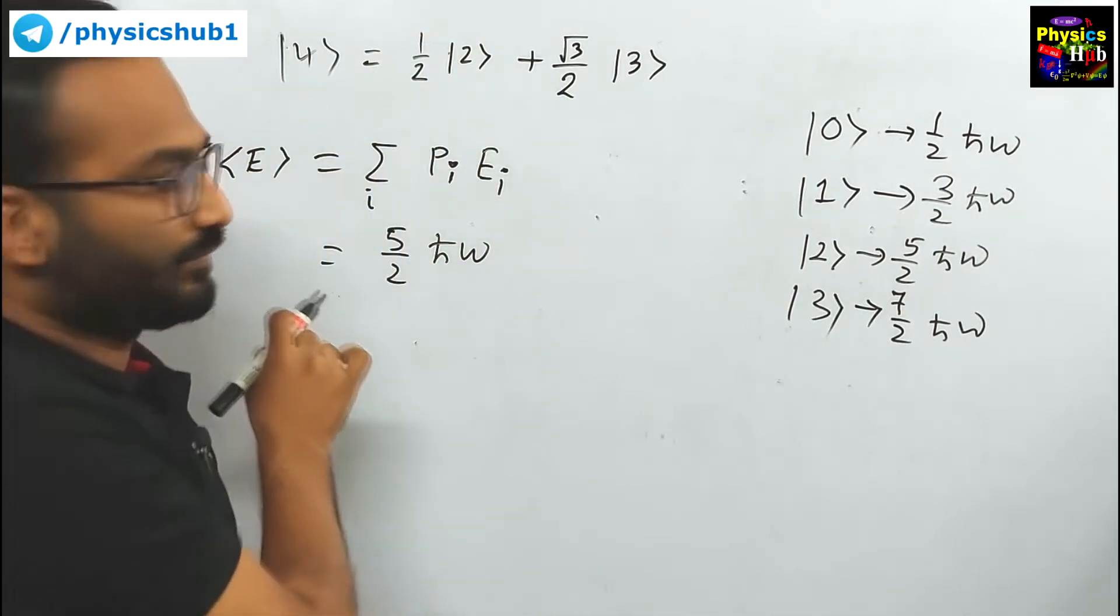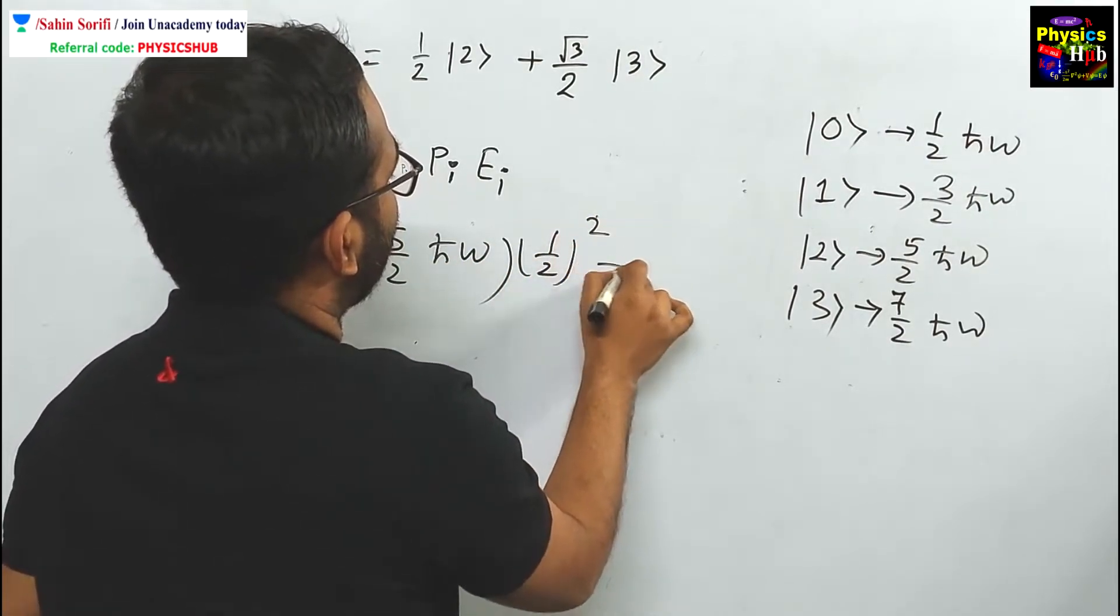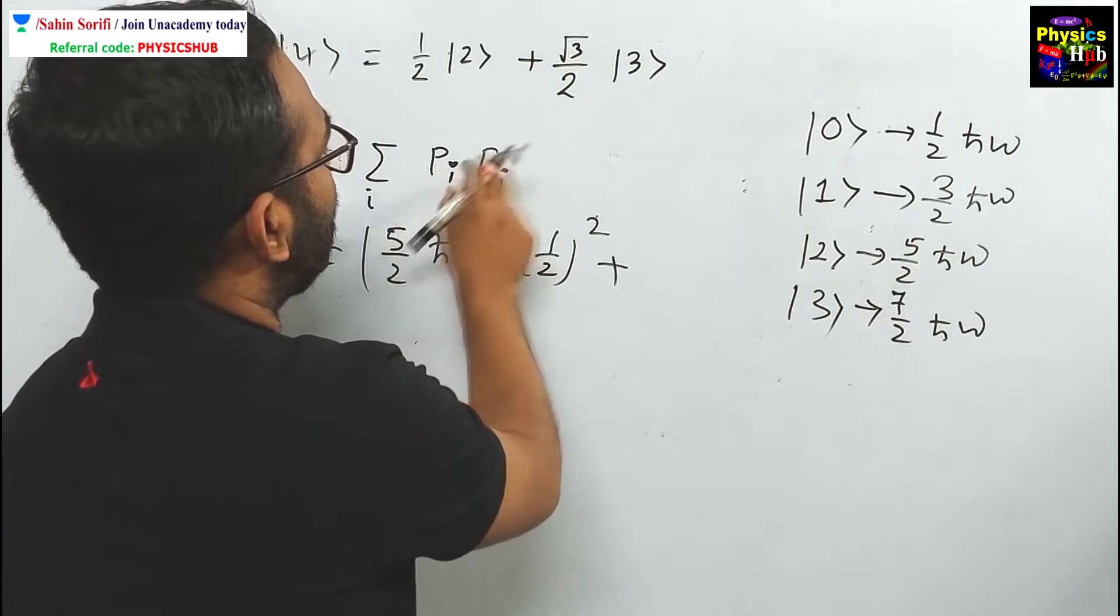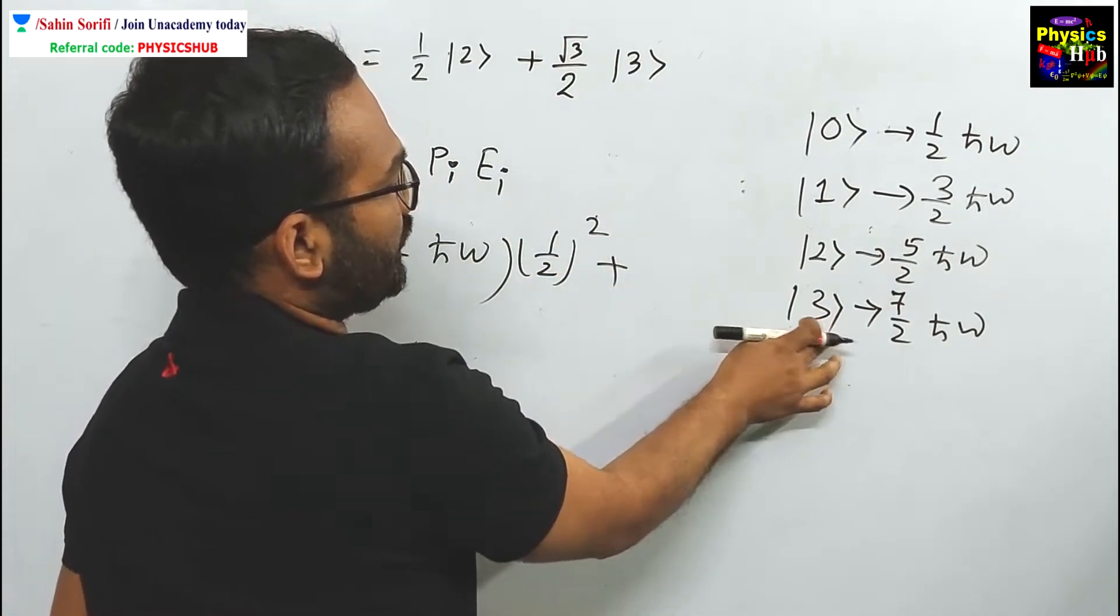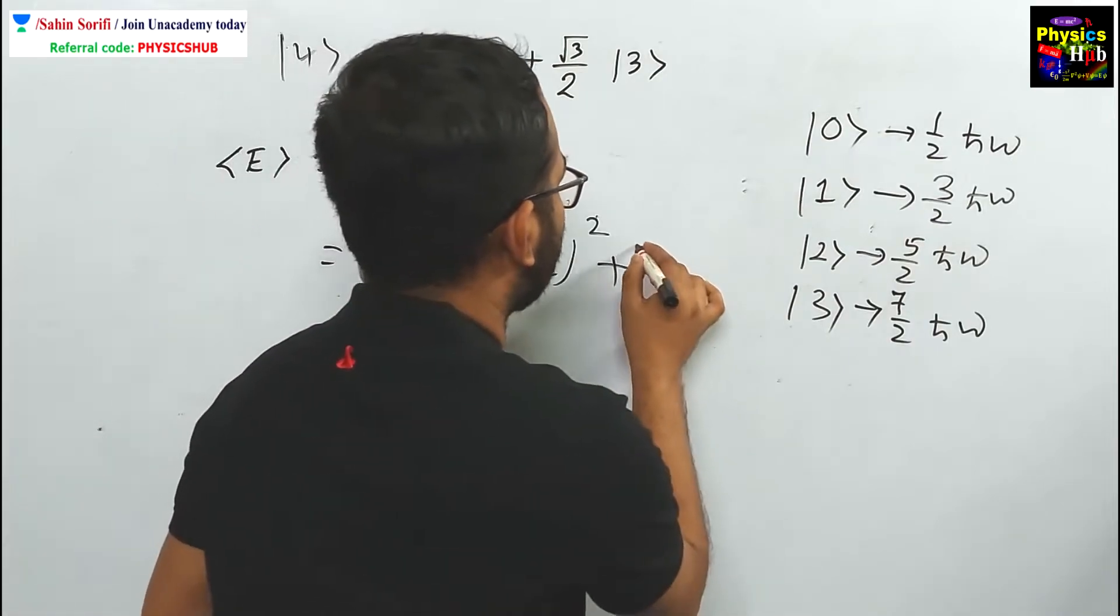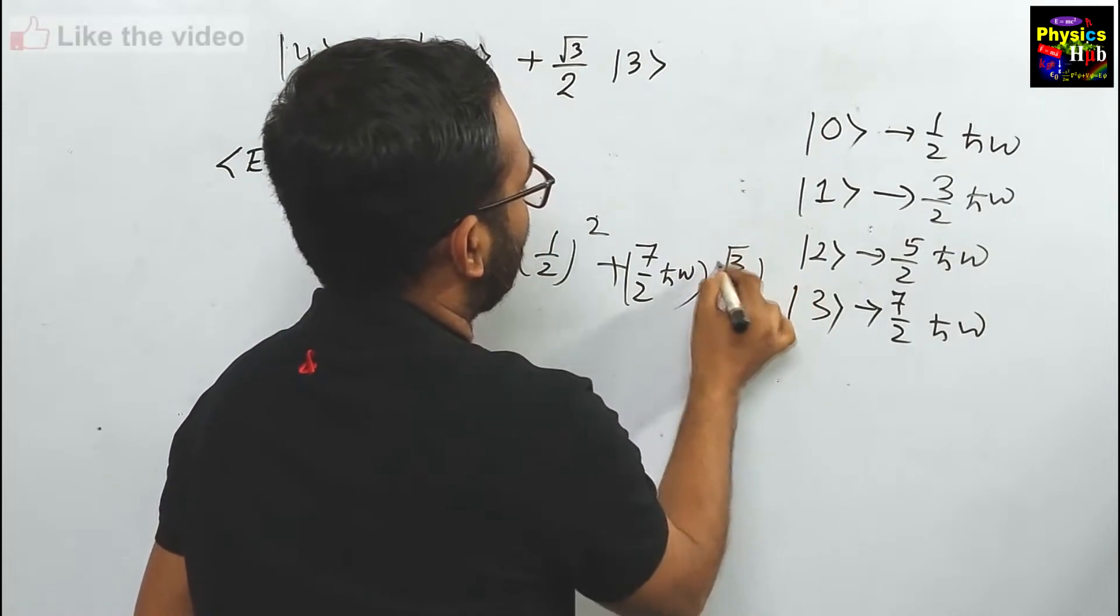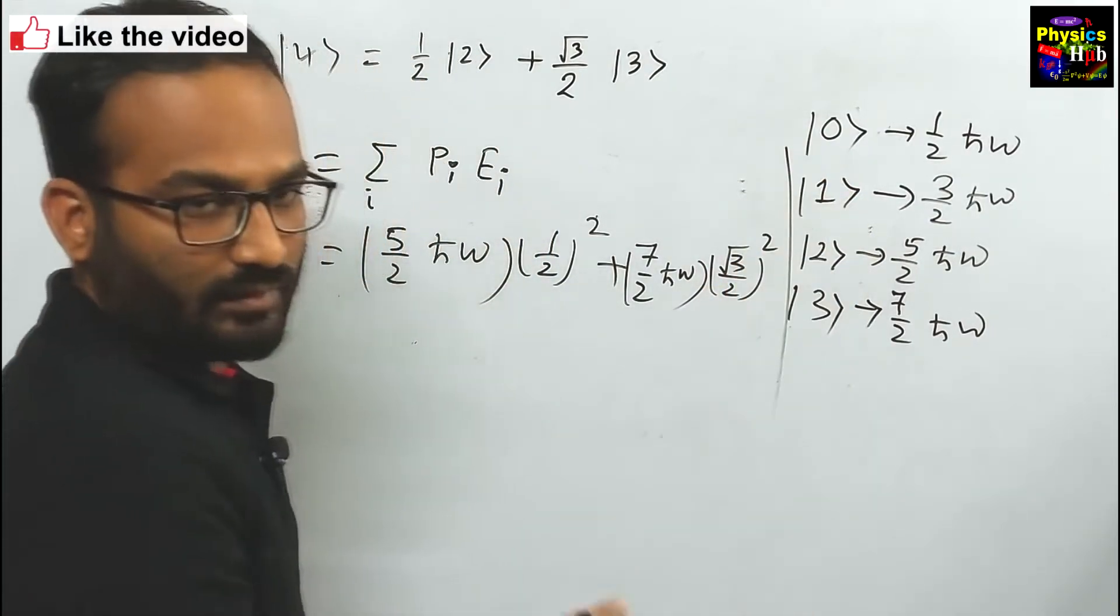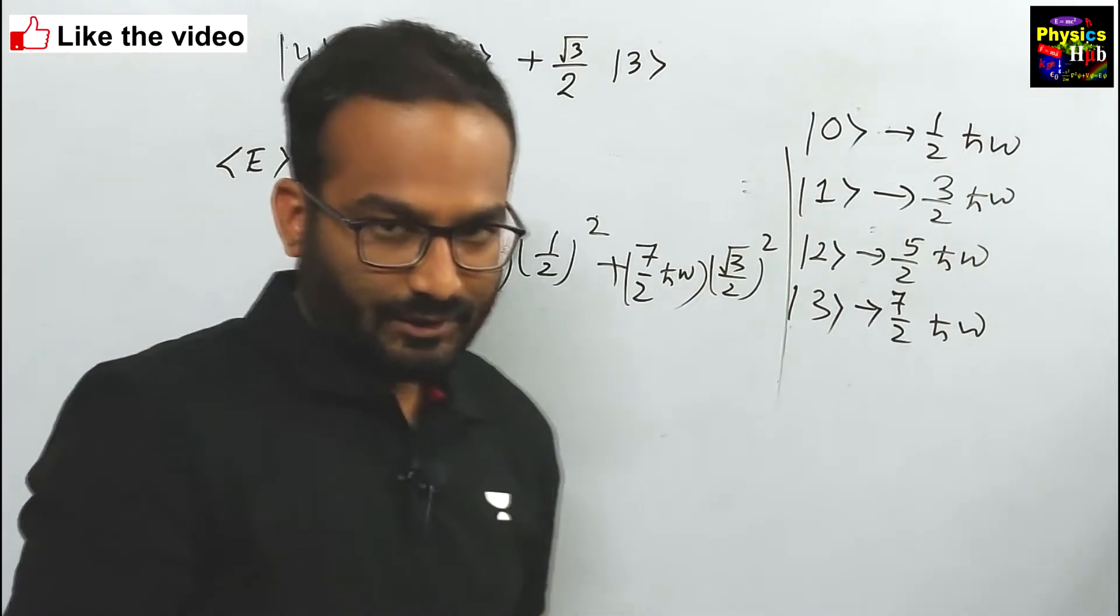Probability is the square of the coefficient. So (1/2)² plus the probability of the third state is (√3/2)², and this third excited state energy is 7/2 ℏω with probability (√3/2)². If you evaluate this you will get the desired value of average energy.